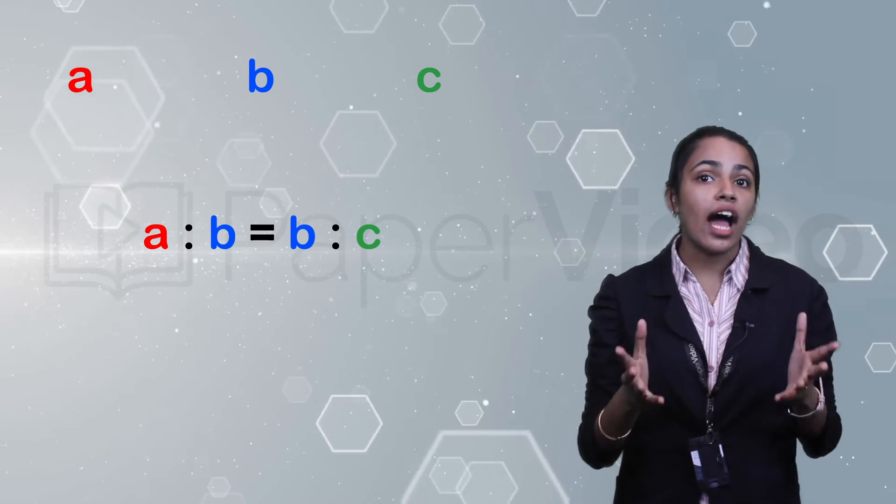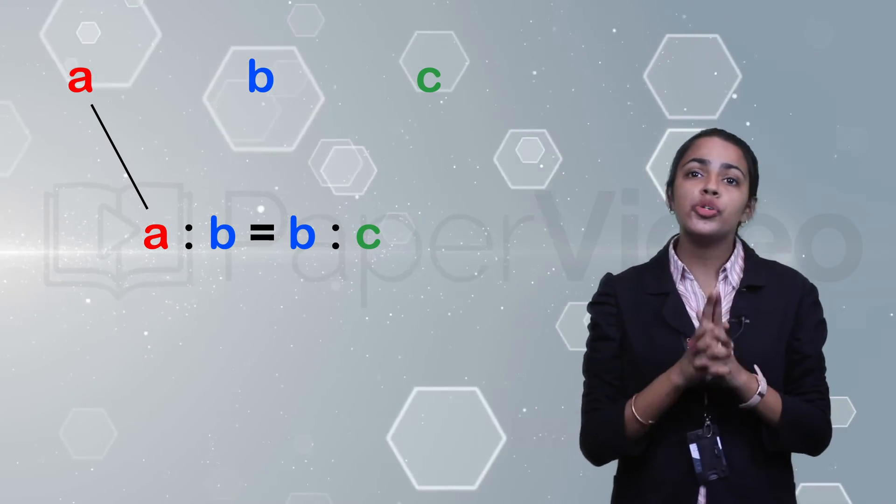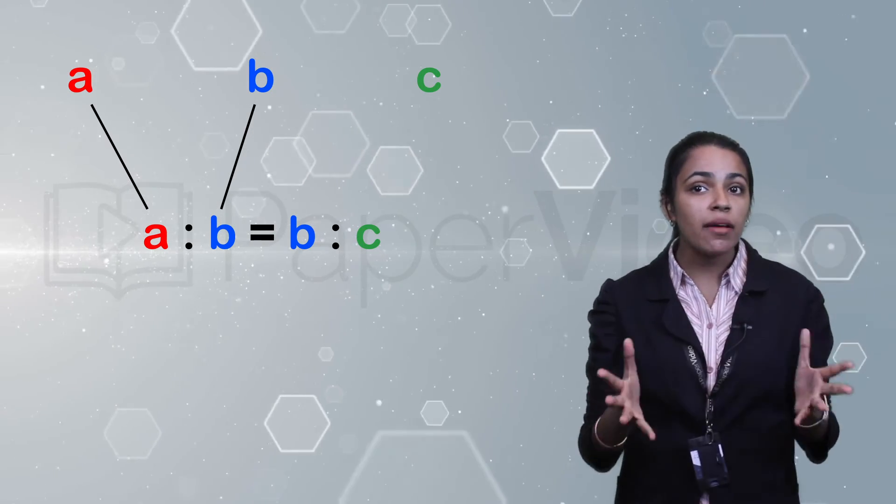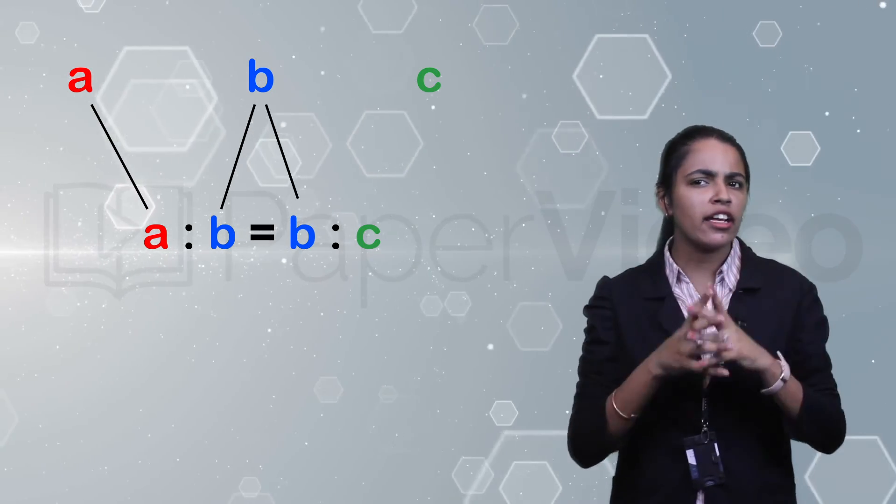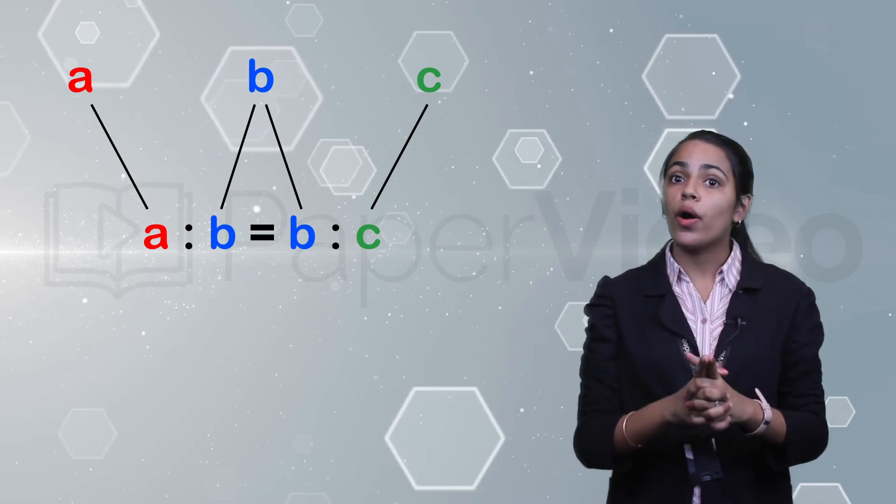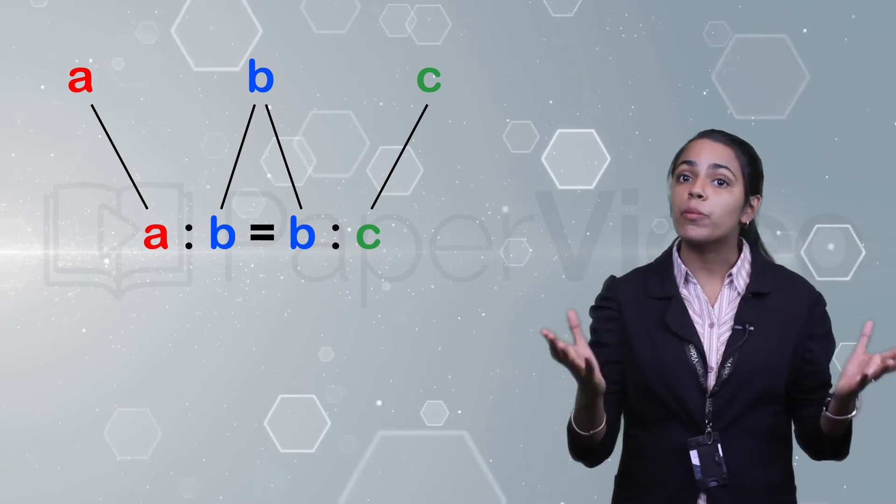This means that if the ratio of the first to the second is the same as the ratio of the second to the third, then the quantities are in continued proportion.